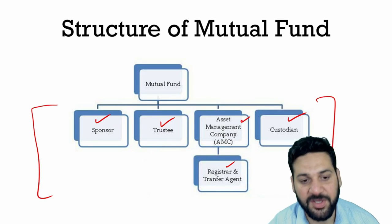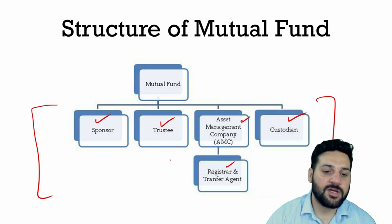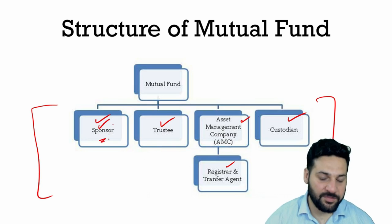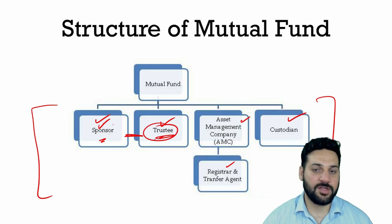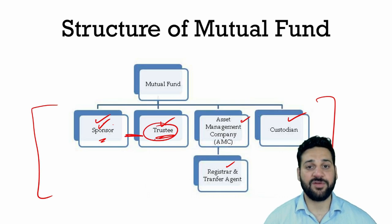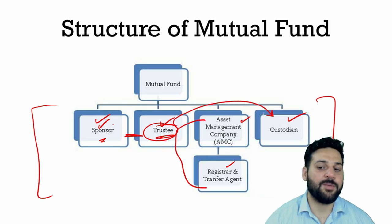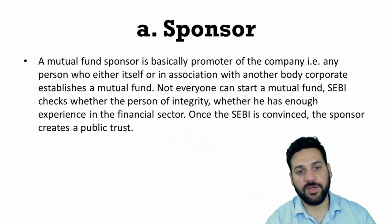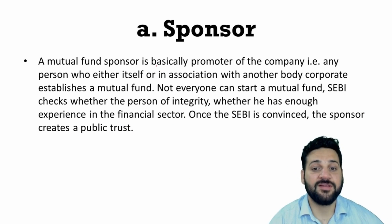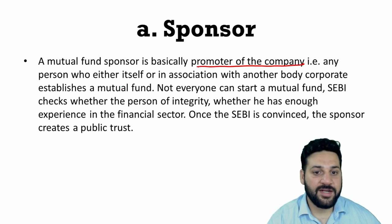So this is the basic structure. There is a sponsor who starts the mutual fund. Then there is a trustee, and there will be a trust deed between the trustee and the sponsor, according to which the trustee operates. The board of trustees then appoints the asset management company, the custodian, and the registrar and transfer agent. Sponsors are basically the promoter of the company, or a person who either individually or in association with another corporate establishes a mutual fund.